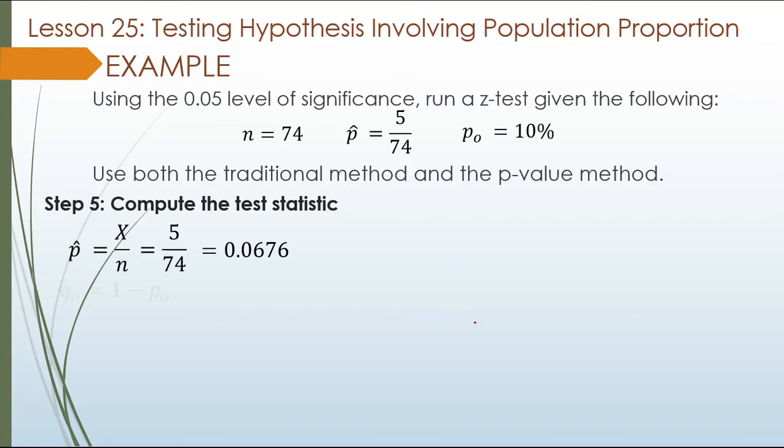We will also compute q-sub-o, which is 1 minus p-sub-o. The p-sub-o is given as 0.1. So 1 minus 0.1 equals 0.9. It is important to know p-sub-o and q-sub-o because we will use them later in computing the test statistic.